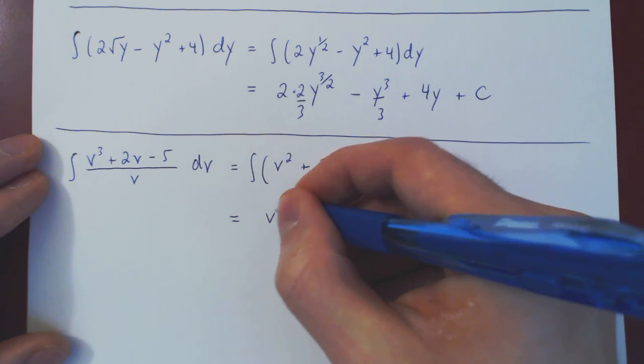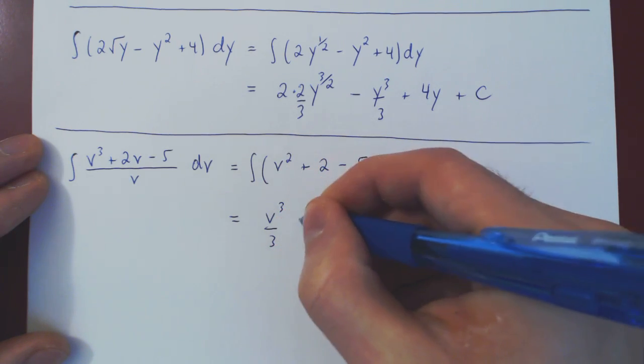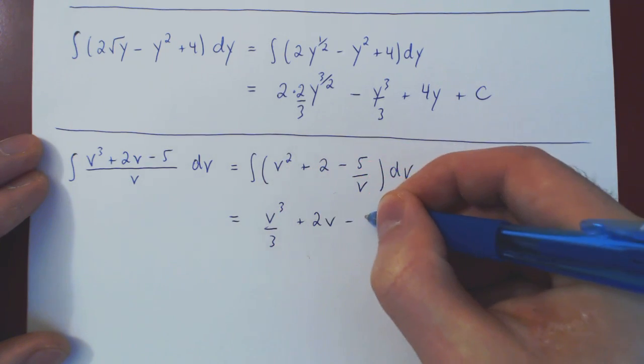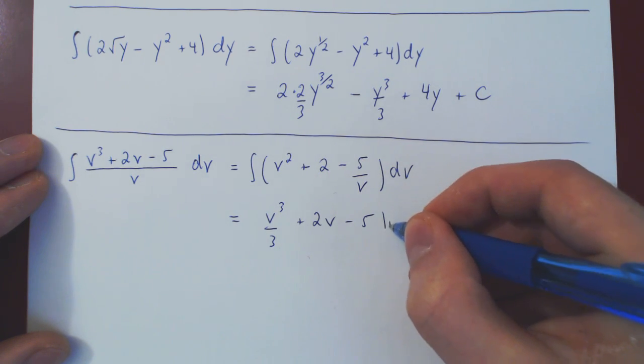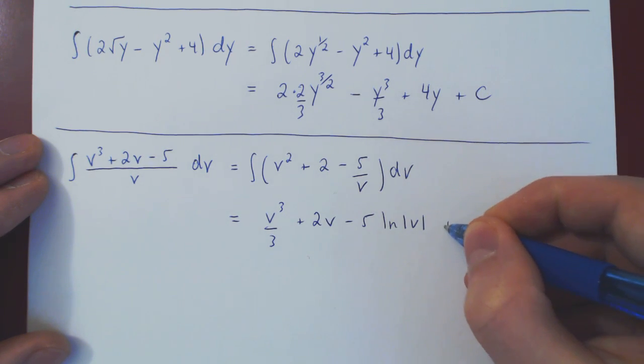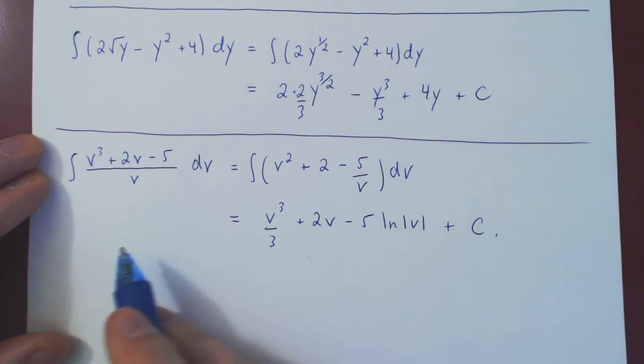And finally, we're left with the power rule, v cubed over 3, plus 2v, minus 5. And, of course, 1 over v integrates to ln of absolute value v plus c. So there you go.